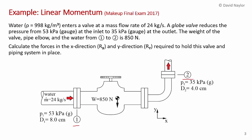The weight of the valve, the pipe elbow, and all of the water contained from 1 to 2 is 850 newtons. We're calculating the forces in the x and y directions required to hold this valve and piping system in place. We're also given the pipe diameter at the inlet and outlet.